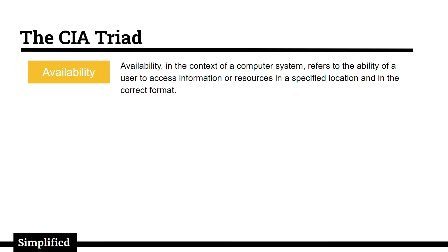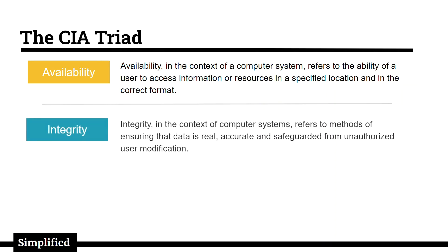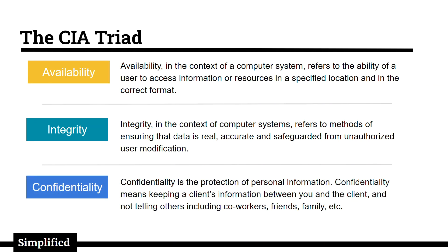Availability, in the context of a computer system, refers to the ability of a user to access information or resources in a specified location and in the correct format. Integrity, in the context of computer systems, refers to methods of ensuring that data is real, accurate, and safeguarded from unauthorized user modification. Confidentiality is the protection of personal information — it means keeping a client's information between you and the client, and not sharing it with others, including co-workers, friends, or family.